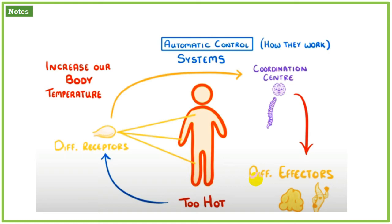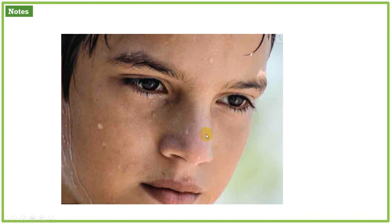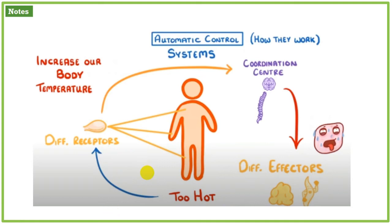If the temperature has increased due to heat, how does the body show homeostasis? How does the body respond? Yes, there are many changes that occur. One change is sweating — when sweating starts, the body temperature returns to normal.